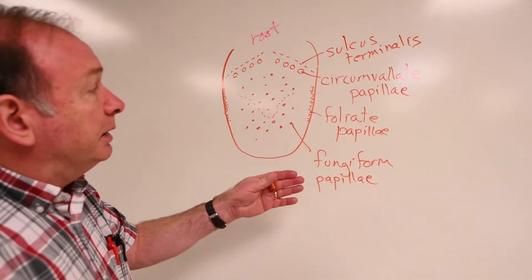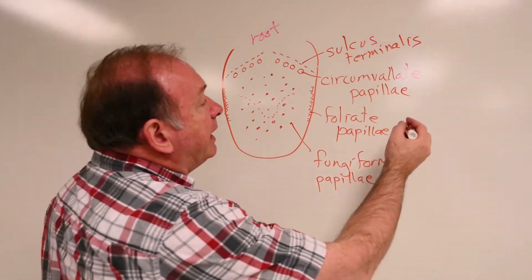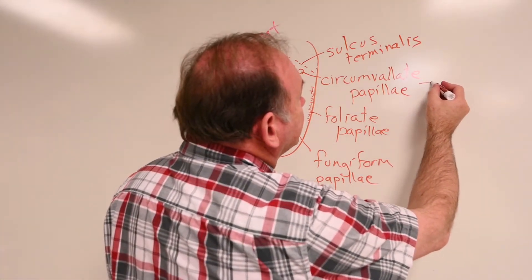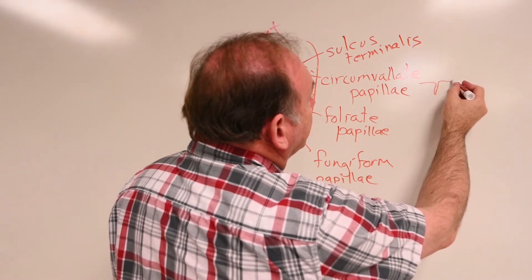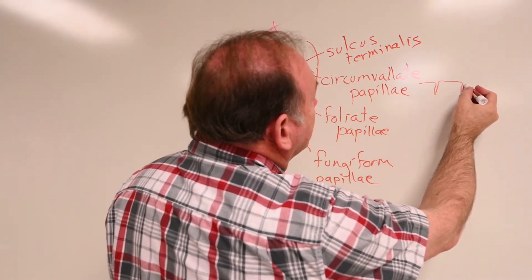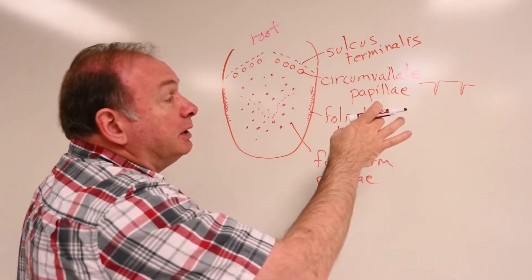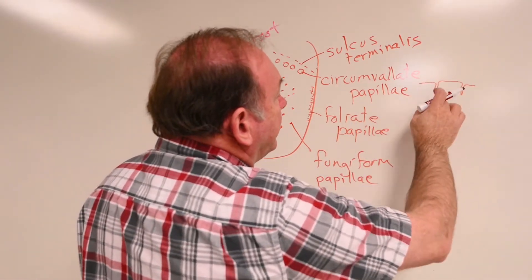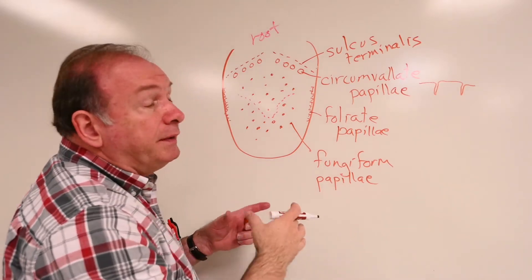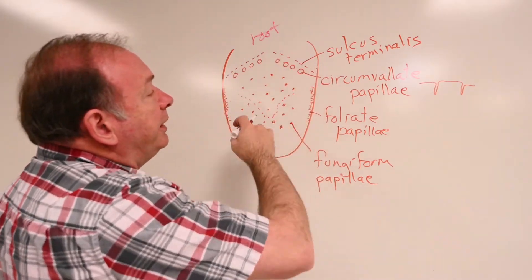So I'll make a quick little series of sketches here. Circumvallate papillae, if you were to look at it in cross-section, they have a little groove beside each one, and the top forms a little disc, a little patch, like a little table sticking up there. Circumvallate papillae, but they're fairly large and visible there at the back of the tongue.